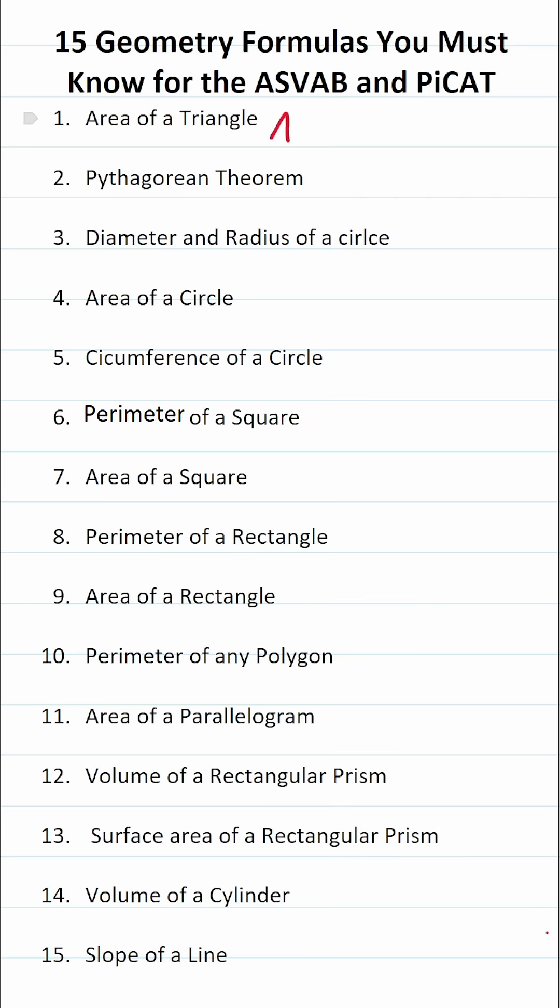Area of a triangle is one-half base times height. Pythagorean theorem says a squared plus b squared equals c squared, where a and b are the legs of the right triangle and c is the hypotenuse.